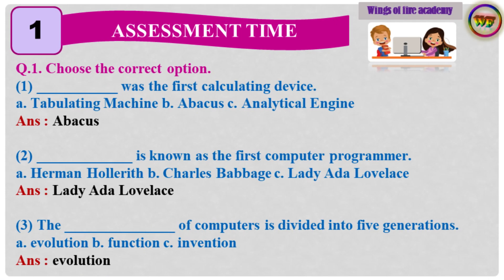Question number 1: Choose the correct option. 1. Dash was a first calculating device. A. Tabulating machine. B. Abacus. C. Analytical engine. Answer: Abacus.